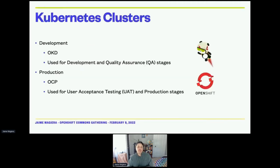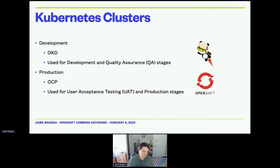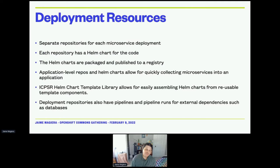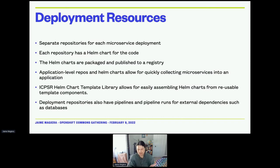A little about our infrastructure: we have Kubernetes clusters. Development uses OKD, which is the upstream of the commercial OpenShift product — we use that for development and quality assurance stages. For production, we use OCP for our user acceptance testing and production stages. In terms of deployment resources, we've created separate repositories for each microservice deployment. Each repository has a Helm chart for the respective image, environmental variables, and so on.